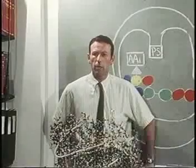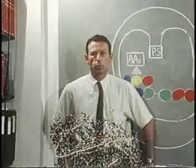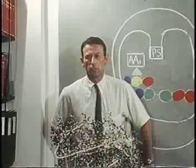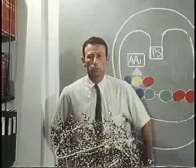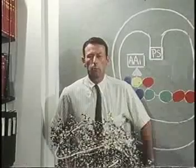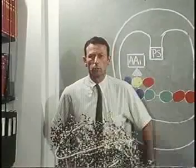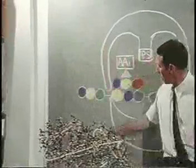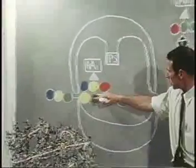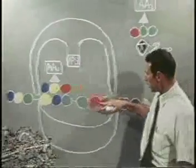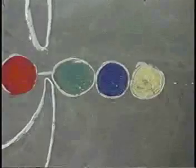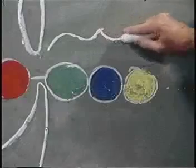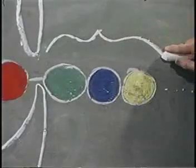Our genes carry the instructions for ordering the amino acids of each protein. Those instructions are encoded in a messenger molecule, an RNA, depicted in this film as a long, snaking chain. Each of the message units is played by three adjacent people in the chain.